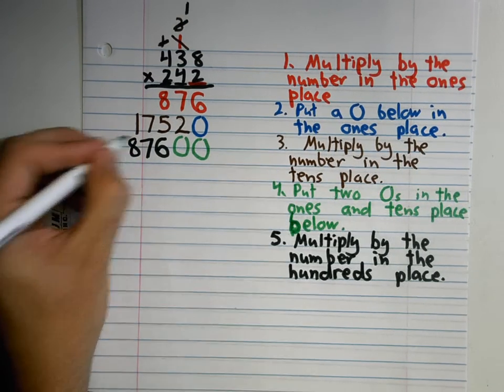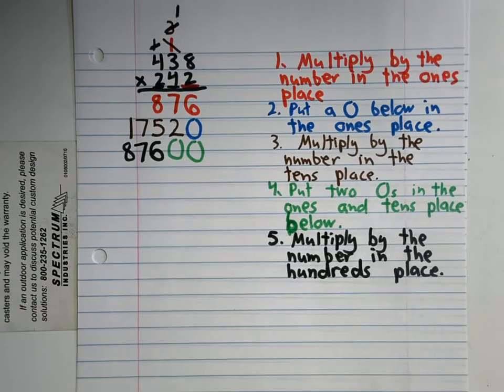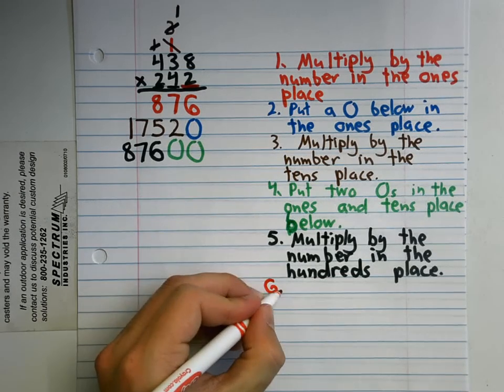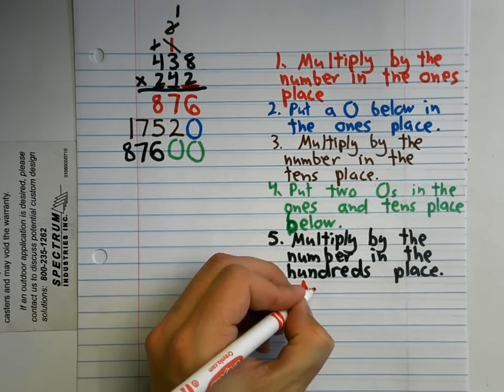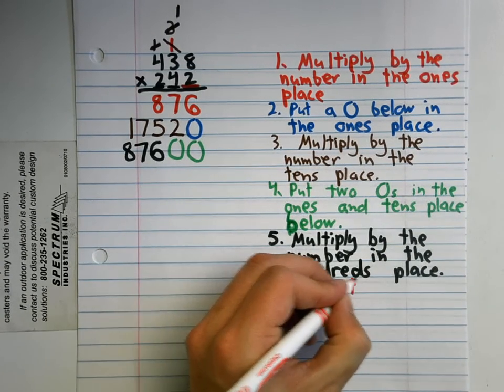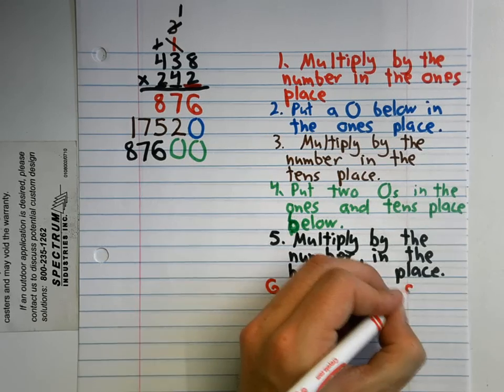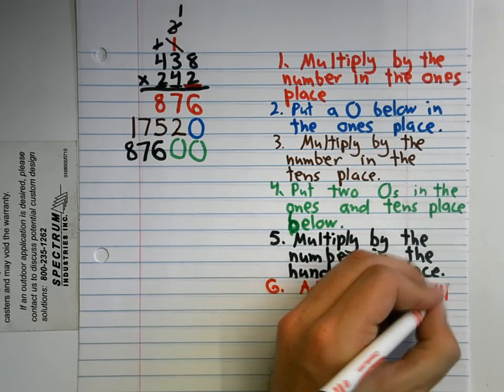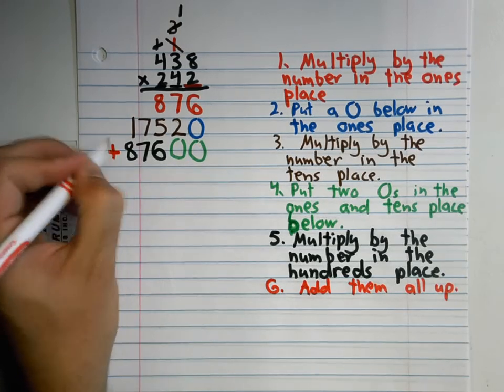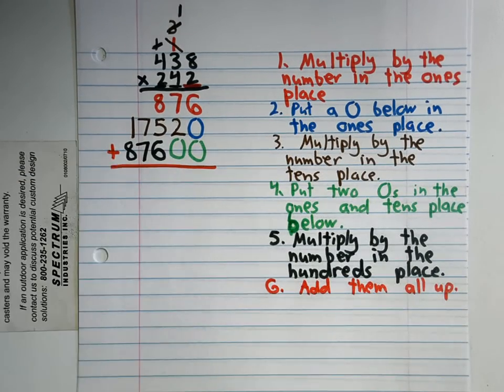I'm not done yet. Who thinks they can tell me what I've done all these steps—what I do now? Add them all up. Add them all up. Put my plus sign and my equal sign. 6 plus 0 plus 0 is what? 6.